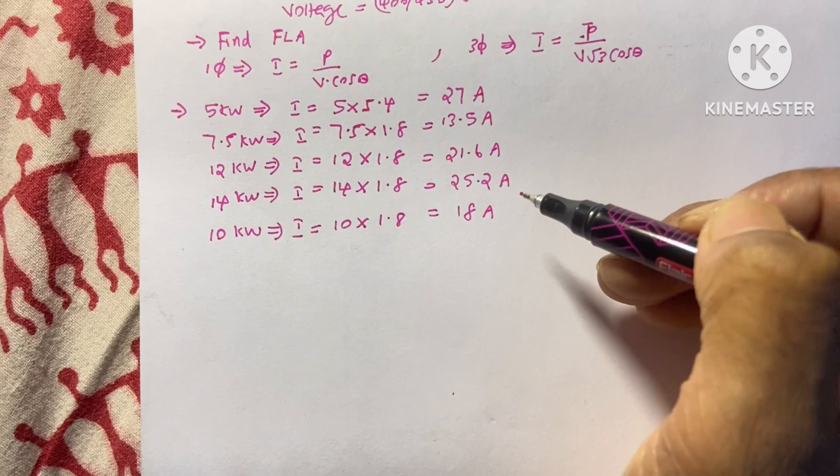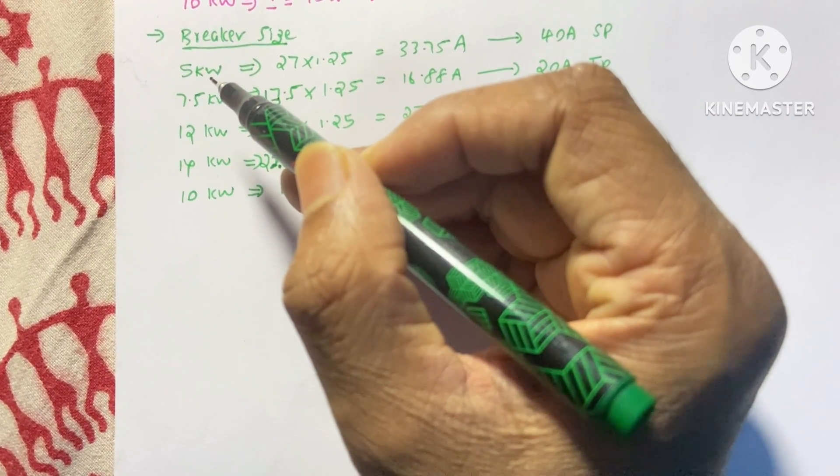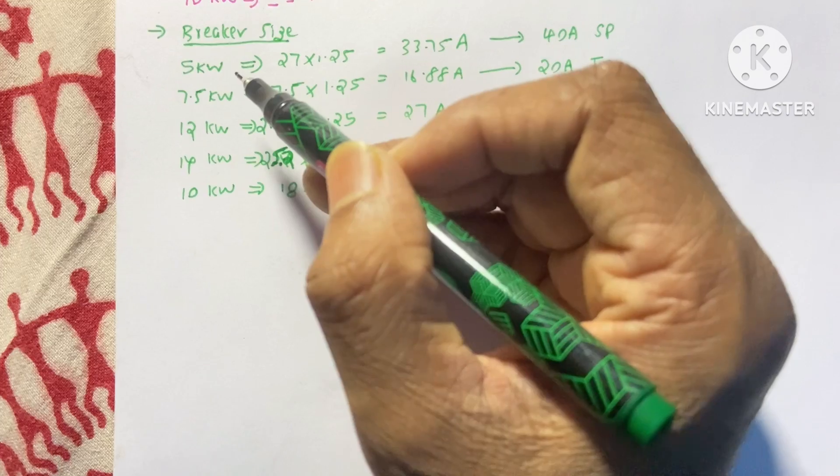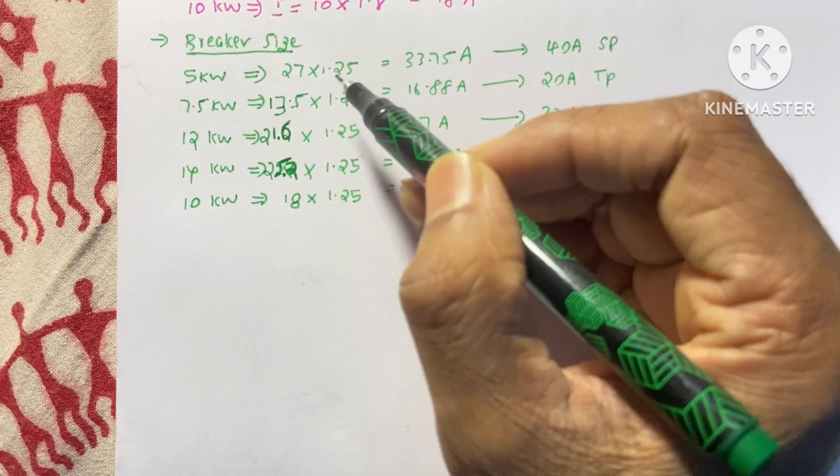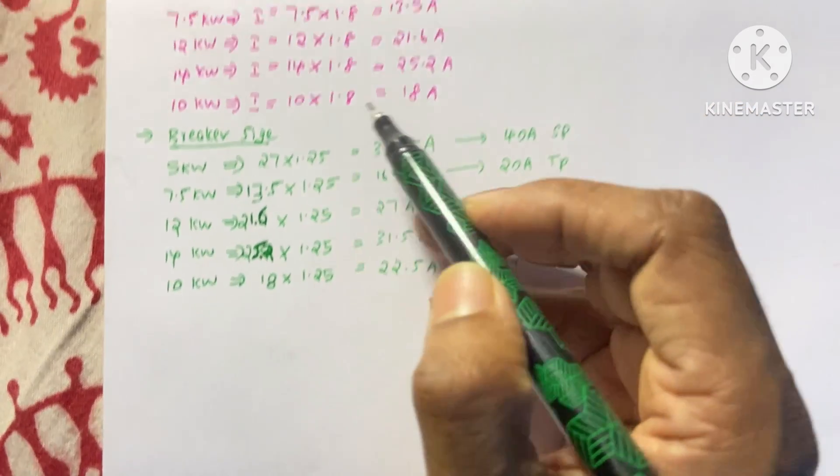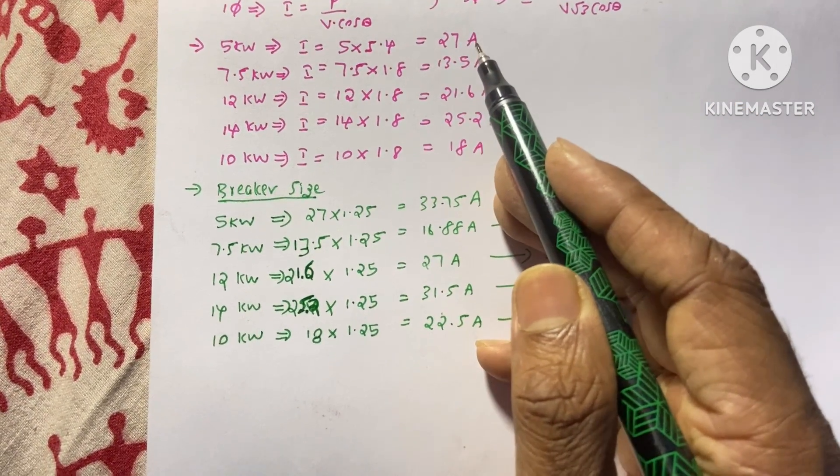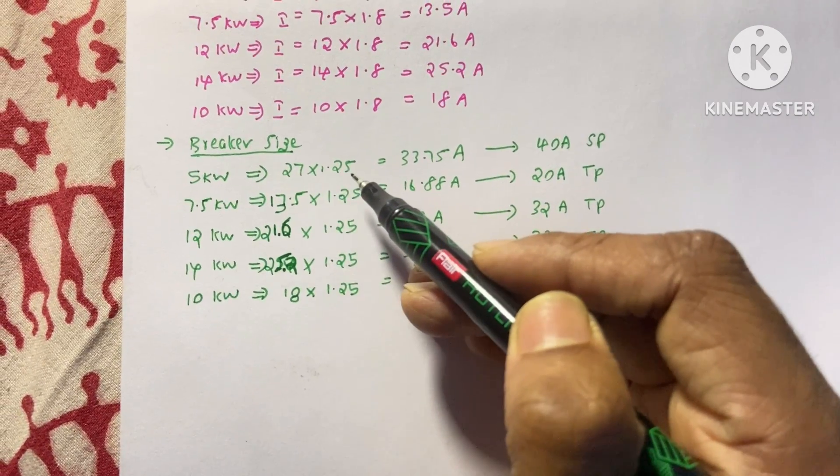Now we are going to find the breaker size. The first motor is single phase 5 kilowatt motor. And to find the breaker size, we need to multiply the full load ampere with 1.25. We have already done that the full load ampere of this motor is 27 ampere.